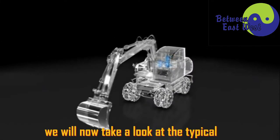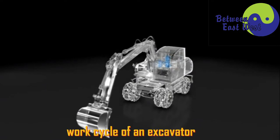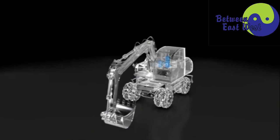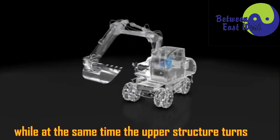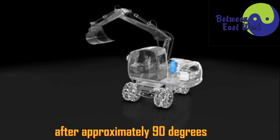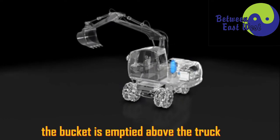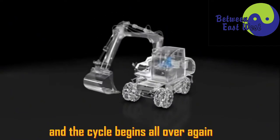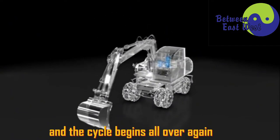We will now take a look at the typical work cycle of an excavator. The digging depth is approximately 2 meters. The filled bucket is raised while at the same time the upper structure turns. After approximately 90 degrees, the bucket is emptied above the truck. It then returns to the starting position and the cycle begins all over again.